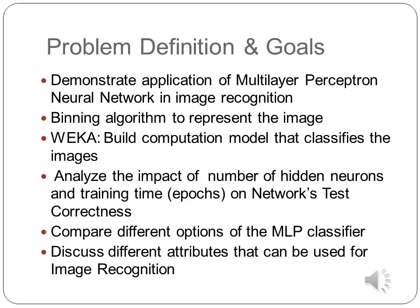The objective of this project is to demonstrate the application of a multi-layer perceptron neural network to recognize images. I will discuss the binning algorithm used to represent the image, then using Weka I will build a computational model that classifies the images. I will analyze how the number of hidden neurons and training time impact the model's performance, compare different MLP classifier options, and also increase attributes from 8 to 64 to see how it improves network performance.